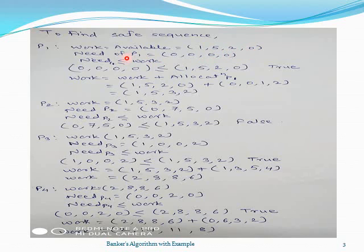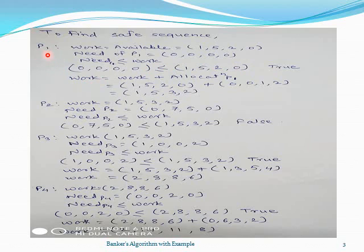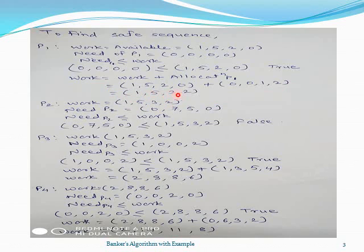As discussed in the previous video, how to calculate the need matrix — we take the value of need for process P1 which is [0, 0, 0, 0]. According to the Banker's Algorithm, we check the condition: if need of P1 is less than or equal to work. It is true, so we modify the value of work: work = work + allocation of P1. So work [1, 5, 2, 0] plus allocation of P1 [0, 0, 1, 2] gives a modified work value of [1, 5, 3, 0]. P1 is added to the safe sequence.